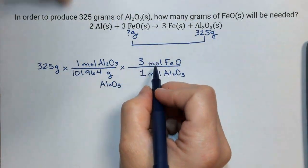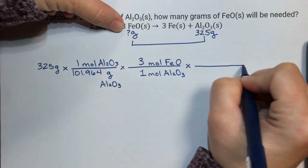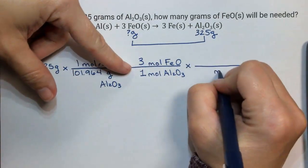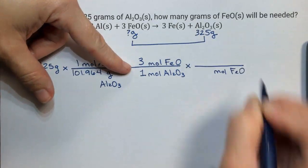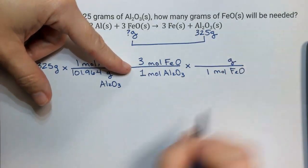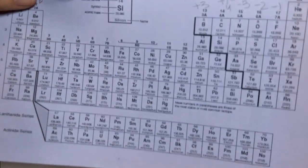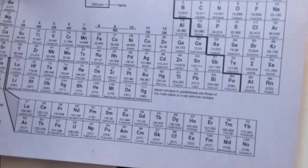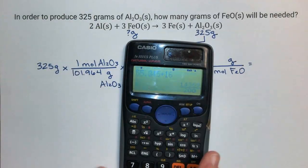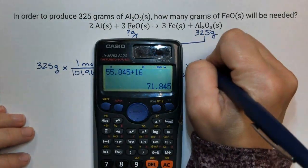I'm at moles, but they ask for grams, so I'm going to do one more step. We're going to bring down mole iron oxide. One mole is equal to the grams from the periodic table, so I'll add up iron plus oxygen, and that gets me 71.845.